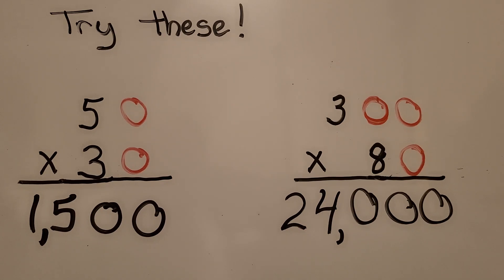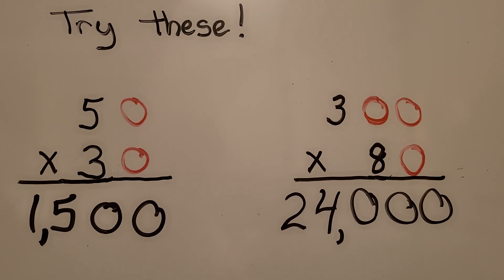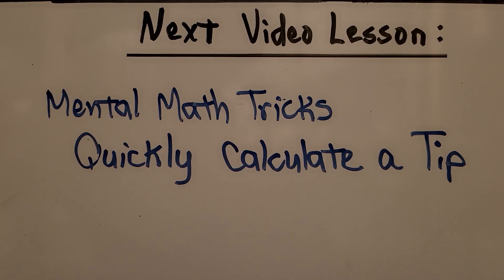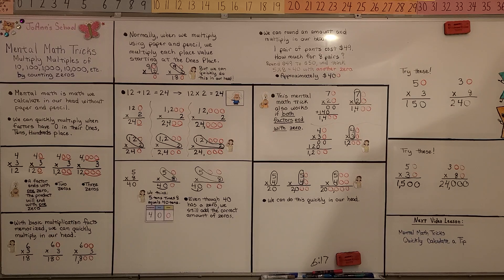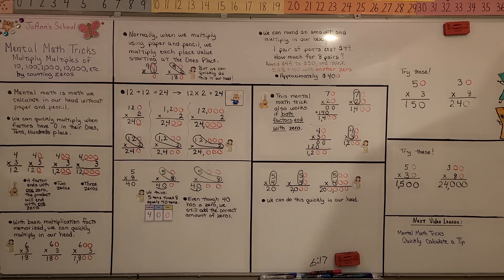Knowing our multiplication facts, we can quickly multiply in our head and count the number of zeros in the factors. When we're at a store or somewhere without paper and pencil, we can even round numbers up to a multiple of 10 or 100 to quickly do mental math. It won't be an exact answer — it'll be an approximation, but it might help you know if you can afford to buy something. In our next mental math tricks lesson, I'm going to show you how to quickly calculate a tip without pencil and paper. I hope you have a wonderful day and enjoyed this video. Bye!